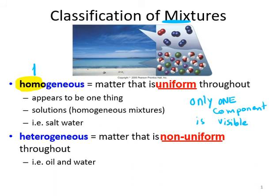Whenever we have more than one component, we say heterogeneous. 'Heterogeneous' means more than one — two, three, any number you may consider. More than one component is visible.